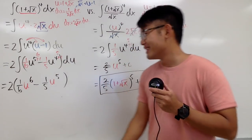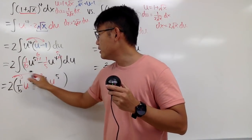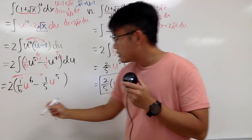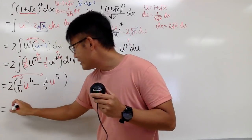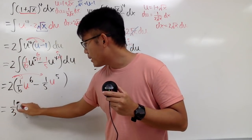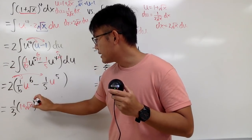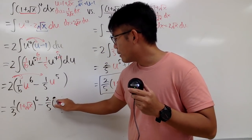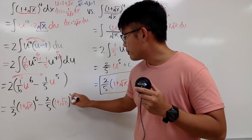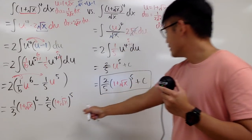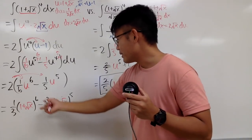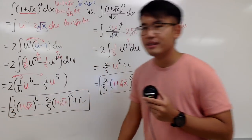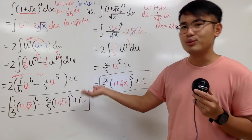Multiplying the 2 in: 2 times 1 over 6 is 1 third, and 2 times 1 over 5 is 2 over 5. Back-substituting u equals 1 plus square root of x, the final answer is 1 third times (1 plus square root of x) to the sixth power, minus 2 over 5 times (1 plus square root of x) to the fifth power, plus C.